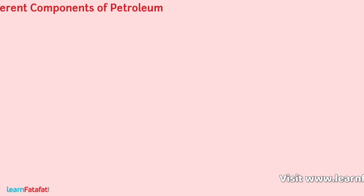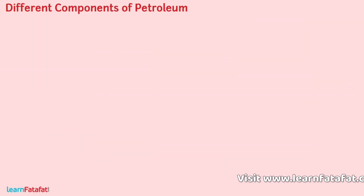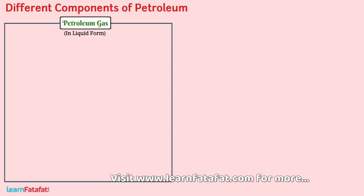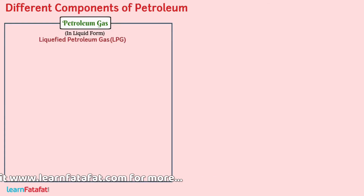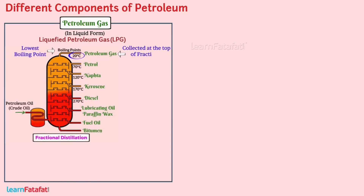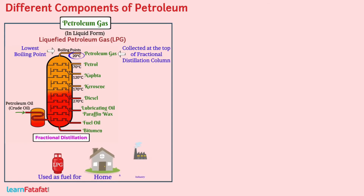Different components are: Petroleum gas in liquid form, called liquefied petroleum gas, has the lowest boiling point. So it is collected at the top of the fractional distillation column. It is used as fuel for home and industry.